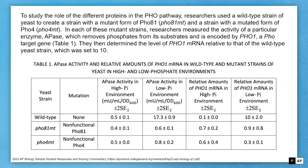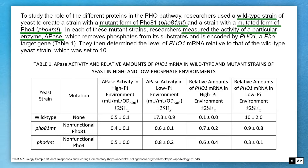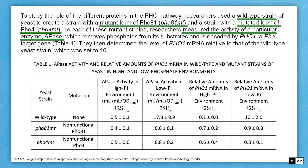To study the role of the different proteins in the PHO pathway, researchers used a wild type strain of yeast to create a strain with a mutant form of PHO81 and a strain with a mutated form of PHO4. In each mutant strain, researchers measured the activity of a particular enzyme, the APase, which removes phosphates from its substrates and is encoded by PHO1, a PHO target gene. They then determined the level of PHO1 mRNA relative to that of the wild type yeast strain, which was set to 10. The table contains APase activity and relative amounts of PHO1 mRNA in wild type and mutant strains in both high and low phosphate environments.